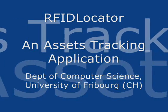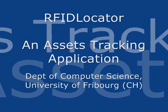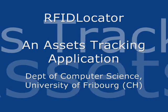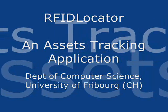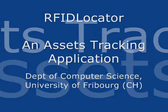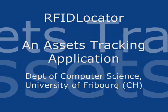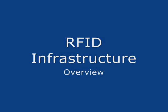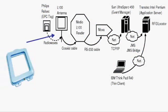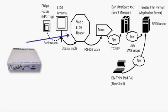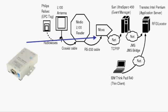Welcome to the video presentation of the RFID Locator project, an assets tracking application designed at the University of Fribourg. Let us begin with a presentation of the required infrastructure. RFID tags are activated by radio waves emitted by antennae. These antennae are connected to readers which dispatch the events through a converter on the network.